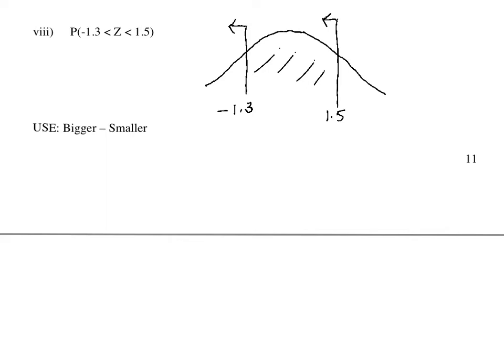Let's find the probability of the standard normal distribution falling between negative 1.3 standard deviations and 1.5 standard deviations.